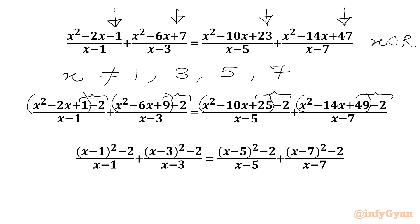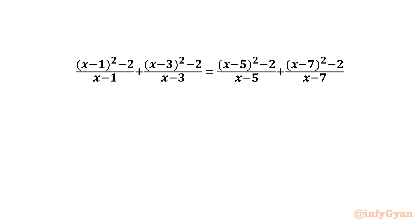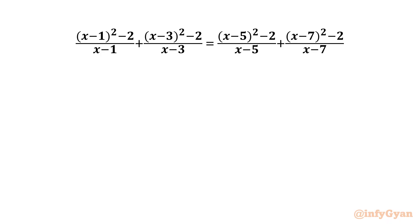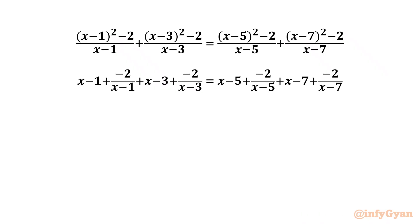Now we are going to split our numerator with respect to the denominator. So we can write here (x minus 1) minus 2 over (x minus 1), plus (x minus 3) minus 2 over (x minus 3), and similarly on the RHS.